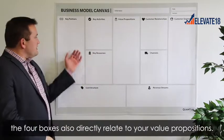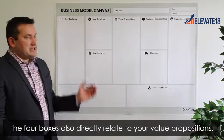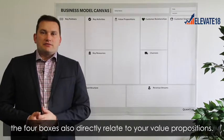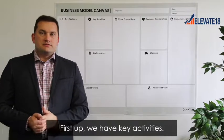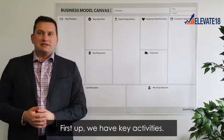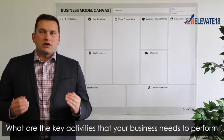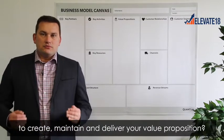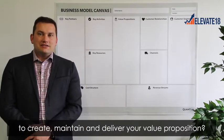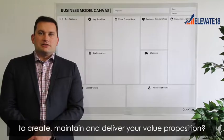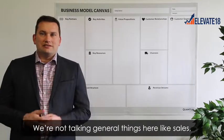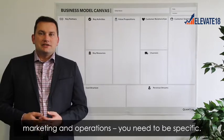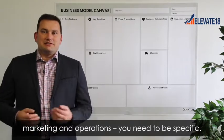On the other side, these four boxes also directly relate to your value propositions. First up we have key activities — what are the key activities that your business needs to perform to create, maintain, and deliver your value proposition? We're not talking general things here like sales, marketing, or operations. You need to be specific.